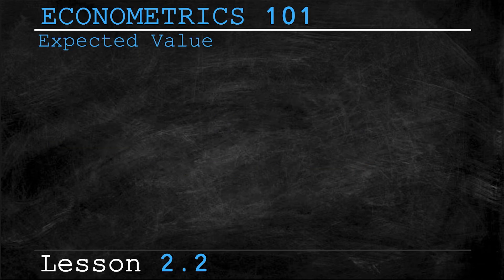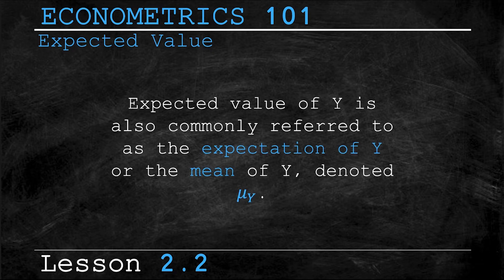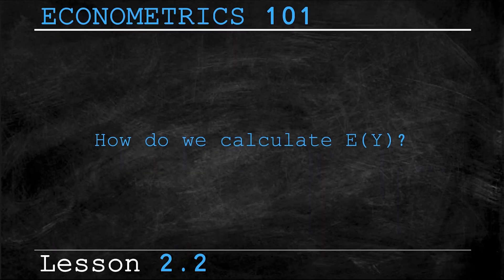Now the expected value of Y is also commonly referred to as the expectation of Y or the mean of Y, denoted μ_Y. Now this funny looking M is lowercase mu. For those of you who don't know, mu is the 12th letter of the Greek alphabet and in Econometrics it will often represent the mean or the average of a set of random variables. So now that we know what μ_Y or the expectation of Y is, we should learn how to calculate it.